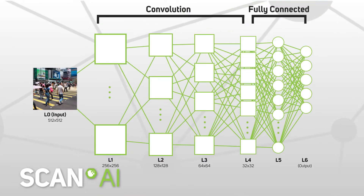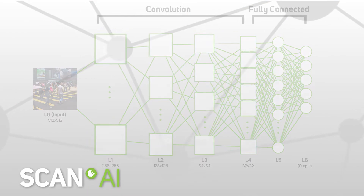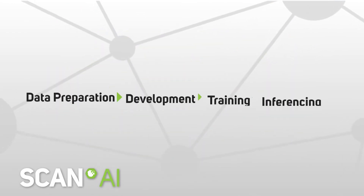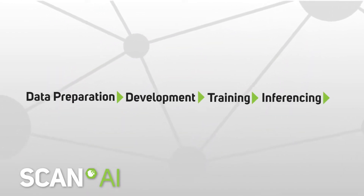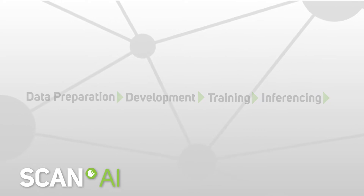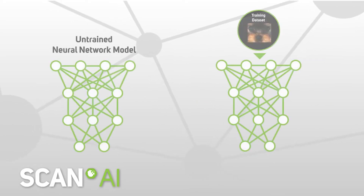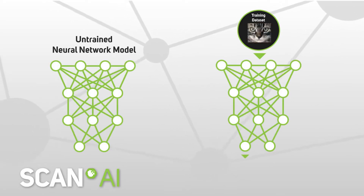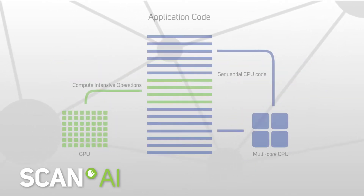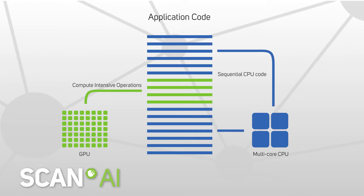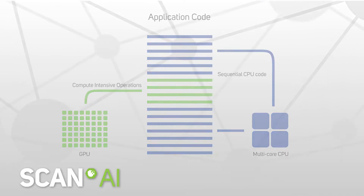Having covered the uses and principles of deep learning, what makes deep learning work and the preparation, development, training and inferencing of a dataset in the previous four videos, the fifth episode in this series deals with the hardware required to perform deep learning.